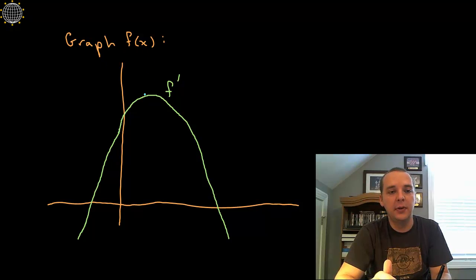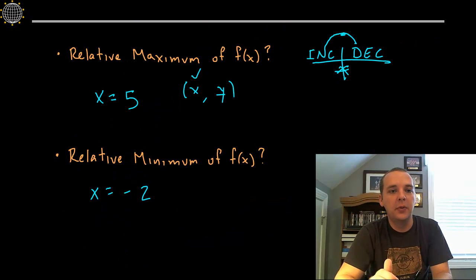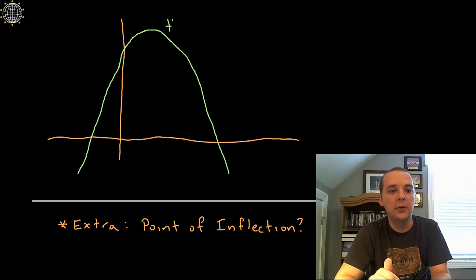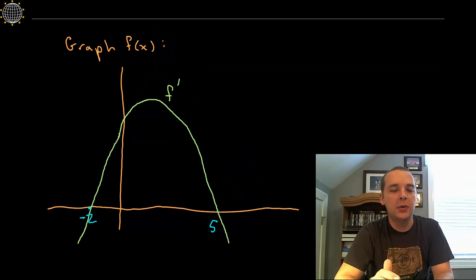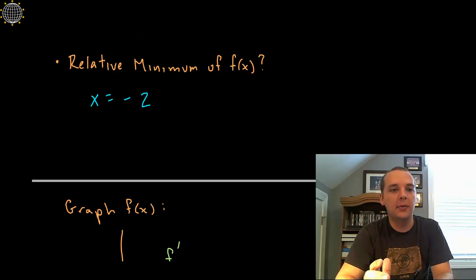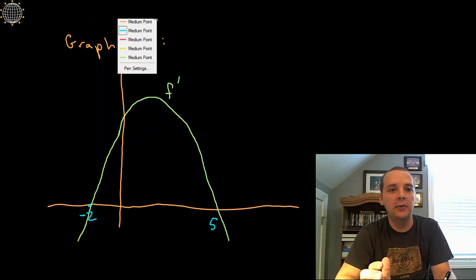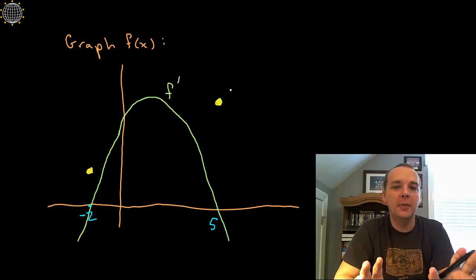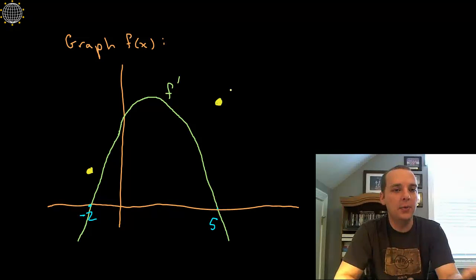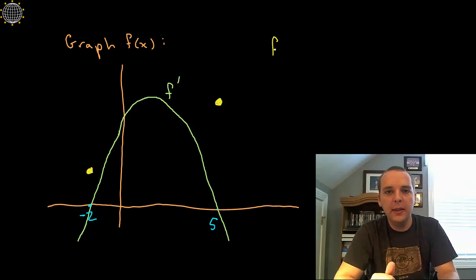Now knowing all that, let's see if we can graph the original function. We've got a maximum at 5 and a minimum at negative 2. So here's negative 2 and here's 5. Remember, there's really no way to discern what the y-values are at negative 2 and 5, so this is simply going to be a sketch of the shape of the graph. I'll put a minimum just somewhere at negative 2 and a maximum just somewhere at 5 — so a low point and a high point.